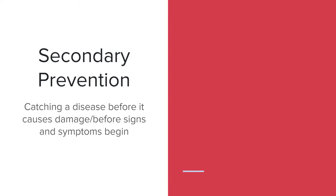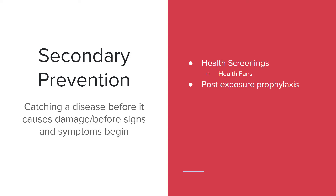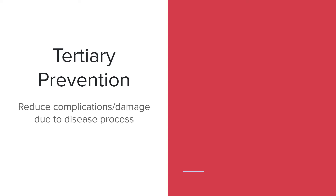Secondary prevention is catching a disease before it causes damage or before the signs and symptoms begin. Primary prevention is when the disease doesn't exist inside the body yet. Secondary prevention is when it does exist but we're catching it before those early signs and symptoms. This is going to be things like health screenings at health fairs, post-exposure prophylaxis such as getting a rabies shot after being bitten by a rabid animal, and contact tracing like you're seeing with COVID or with STIs. It can also be getting a pap smear to detect cancer cells already in the body so you can get minimal rather than extensive treatment.